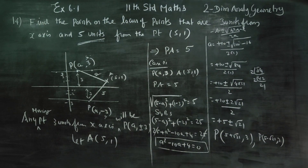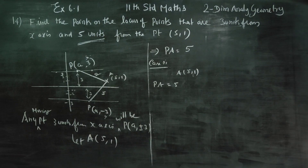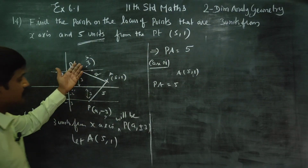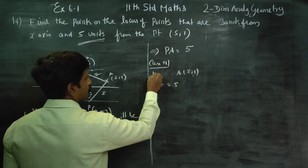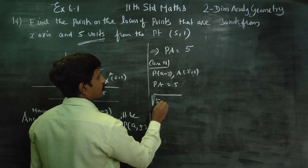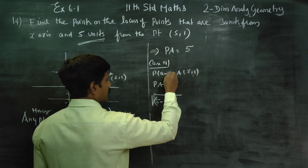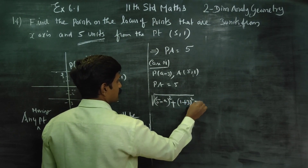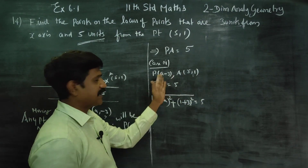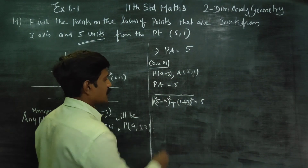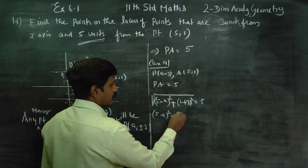Case 2: P = (a, minus 3). PA = 5. Using the distance formula: PA = square root of (5 minus a) whole square plus (1 minus (minus 3)) whole square = 5. That is square root of (5 minus a) squared plus (1 plus 3) squared = 5. Squaring both sides: (5 minus a) squared plus 16 = 25.